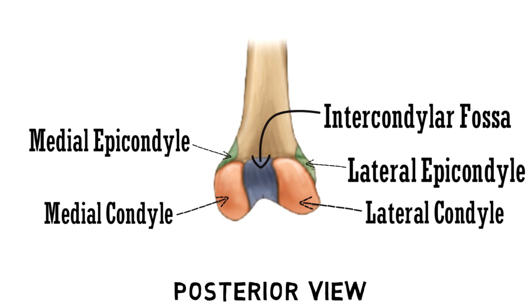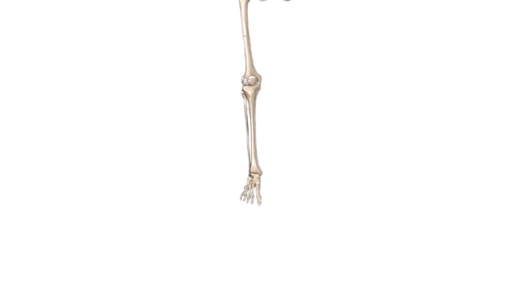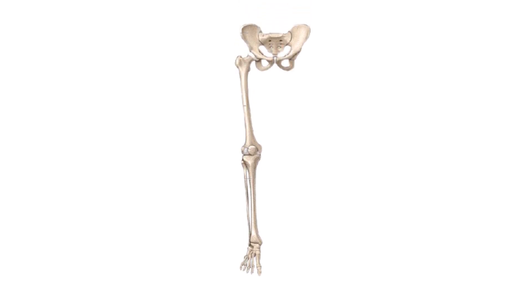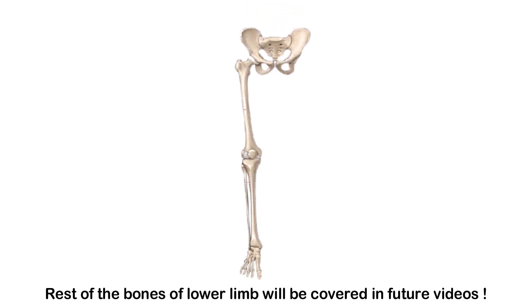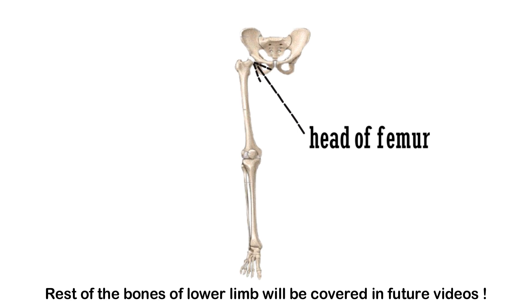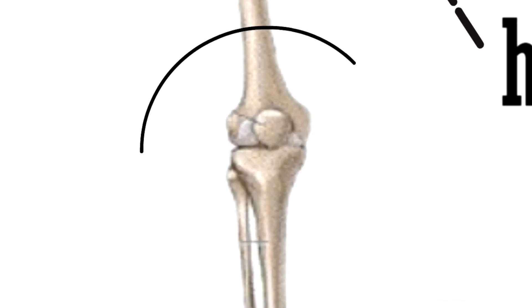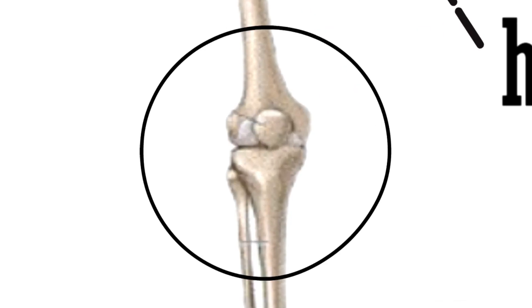Now let's see how the bones of the lower limb look. This is the head of femur, which articulates with the acetabulum of the hip bone. This circle which you can see is the patella bone, also called the knee bone.